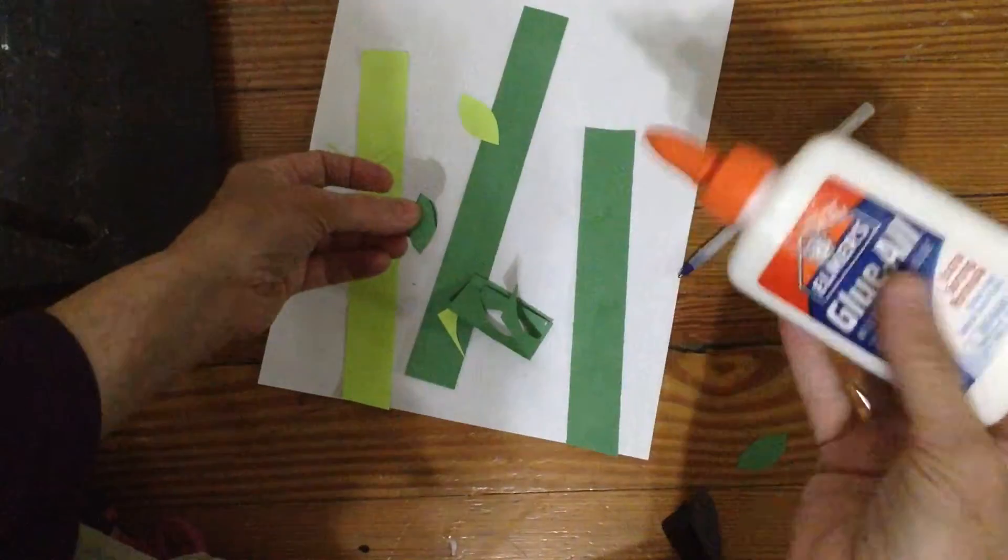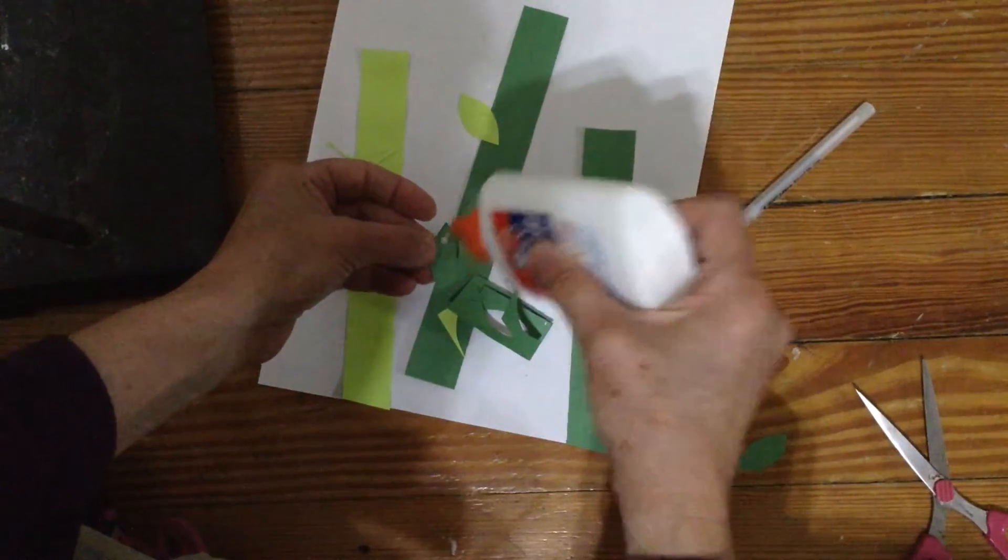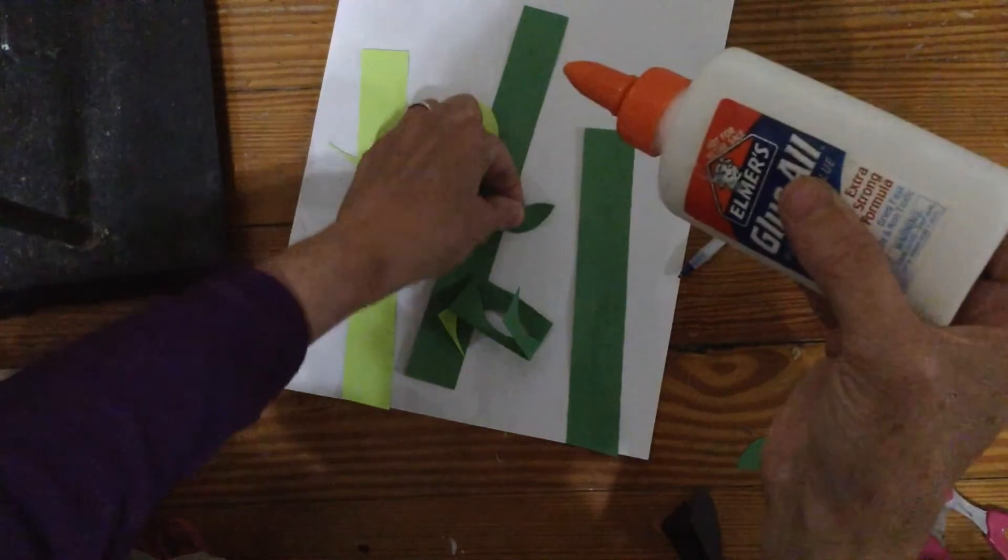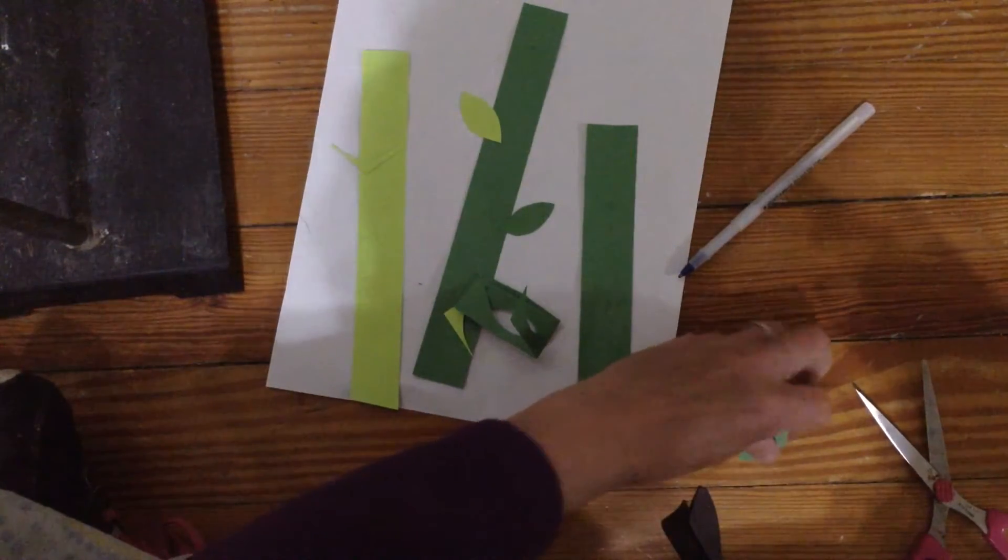If I see that pencil mark or the pen mark, I put the glue on that side so that when I flip it over, I don't see where I drew that line.